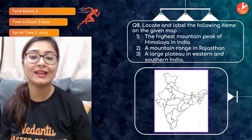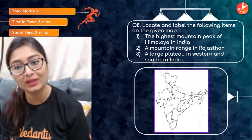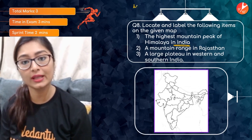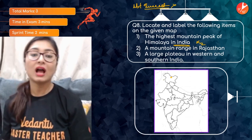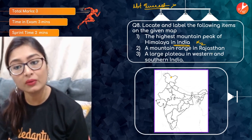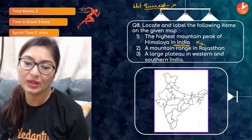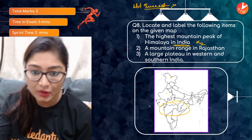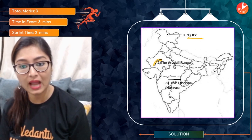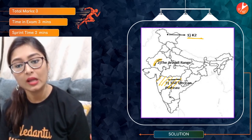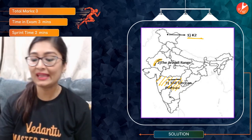Next question: locate and label the highest mountain peak of the Himalayas in India, a mountain range in Rajasthan, and a large plateau in western and southern India. Don't confuse this — though Mount Everest is the highest peak overall, within India it is K2 located in Jammu and Kashmir. The mountain range in Rajasthan is the Aravali. The plateau covering western and southern India is the Deccan Plateau.